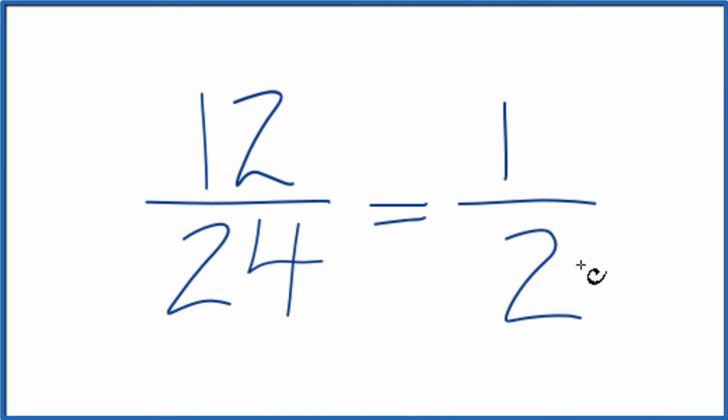These are equivalent fractions. They have the same value. We've just reduced 12 24ths down to 1 half.